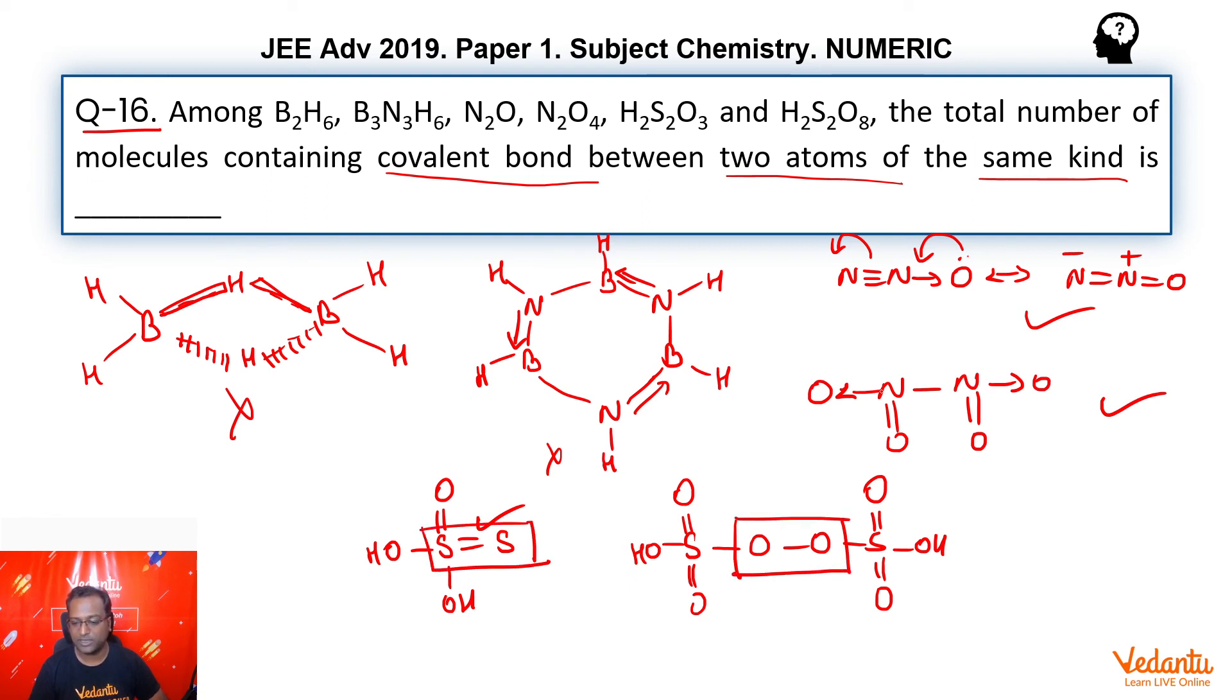So I will just mark the systems where you see same identical atom bond formation. So 1, 2, 3, and 4. Hence, our answer is 4.